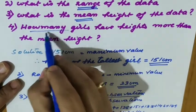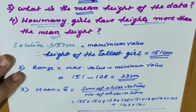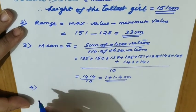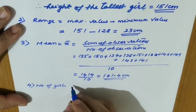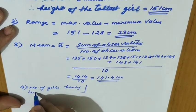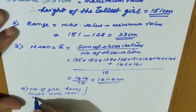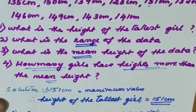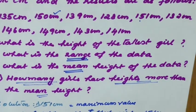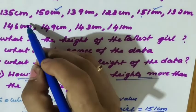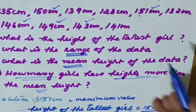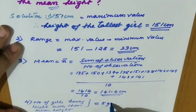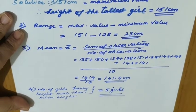How many girls have heights more than the mean height of 141.4 cm? Checking each value: 135 — not possible; 150 — possible; 139 — not possible; 128 — not possible; 151 — possible; 132 — not possible; 146 — possible; 149 — possible; 143 — possible; 141 — not possible, since ours is 141.4. So there are 5 girls with height more than the mean height.